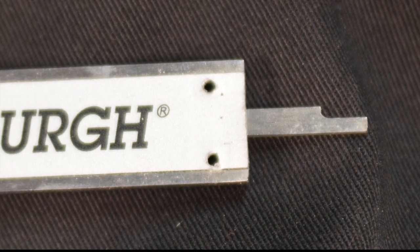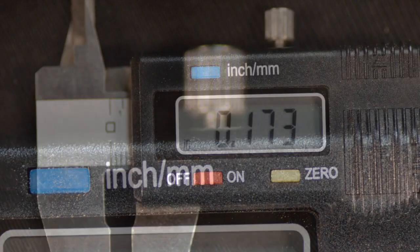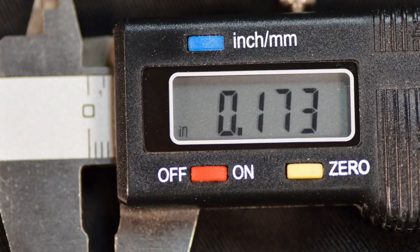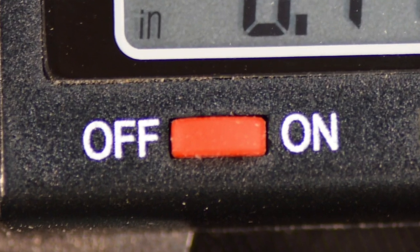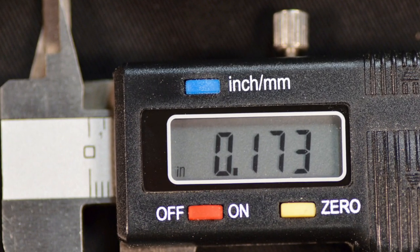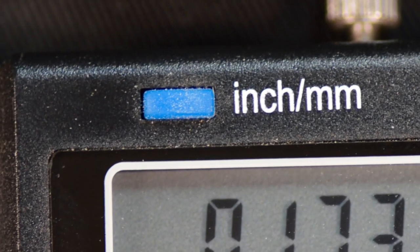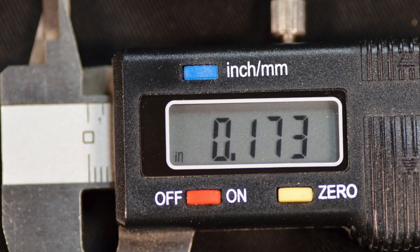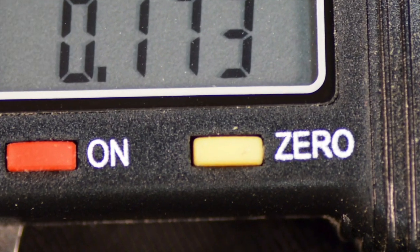Most calipers have a locking screw to hold the jaws in a fixed position. Depending on the manufacturer, the LCD may or may not have an on-off button. Typically, digital calipers have a button which allows the user to toggle between decimal inches and millimeters. In addition, it should be equipped with a zero button to reset the display to zero.